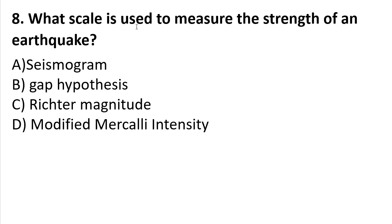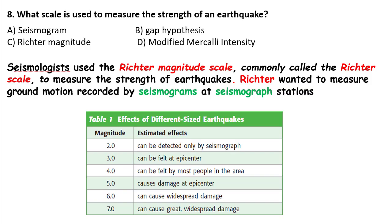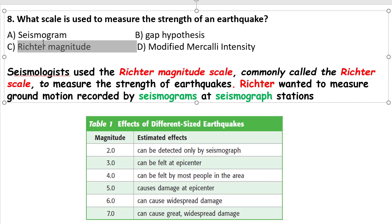Question 8: What scale is used to measure the strength of an earthquake? A) Seismogram, B) Gap hypothesis, C) Richter magnitude, D) Modified Mercalli intensity. Seismologists use the Richter magnitude scale, commonly called the Richter scale, to measure the strength of an earthquake. Richter wanted to measure ground motion recorded by a seismogram. According to the definition, the answer will be C — Richter magnitude scale.